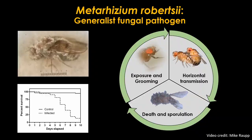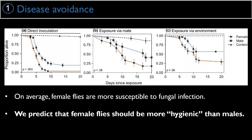I exposed male and female flies to this fungus and measured their survival. Female flies are dying more rapidly — on average, females are more susceptible to this pathogen than males. This is actually somewhat uncommon; in the animal kingdom, males are usually more susceptible to disease than females. Because of this, we would predict that females would be more hygienic than males.